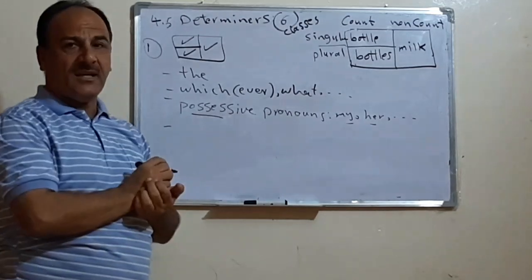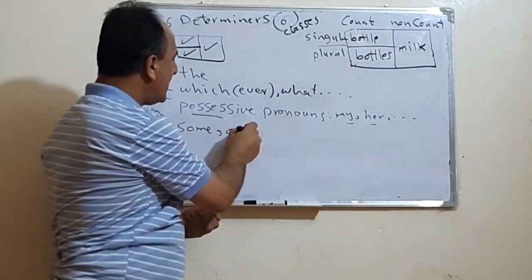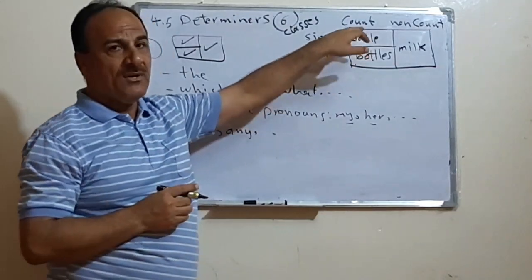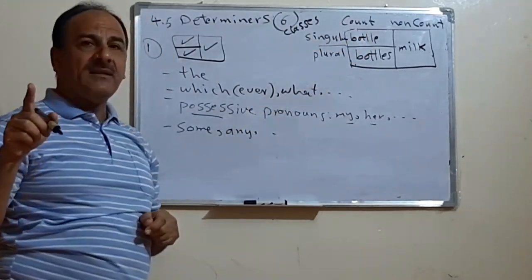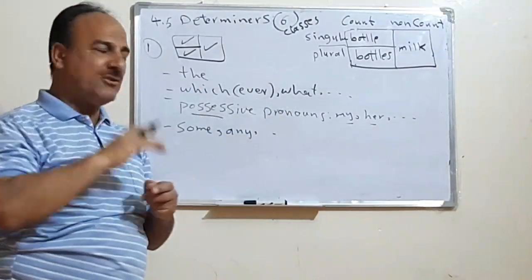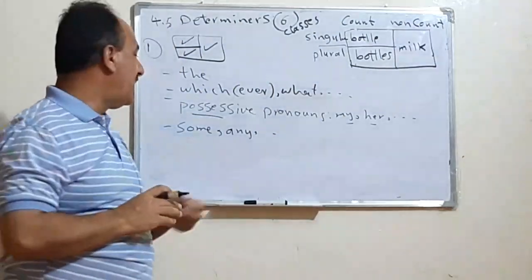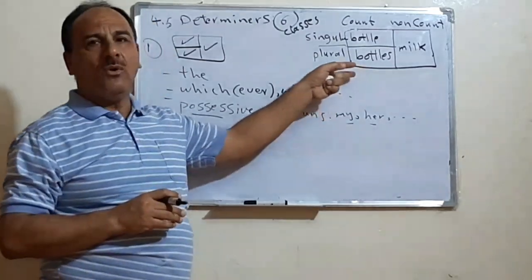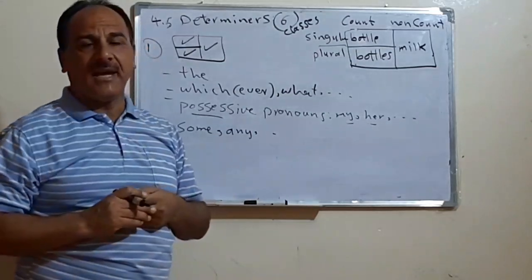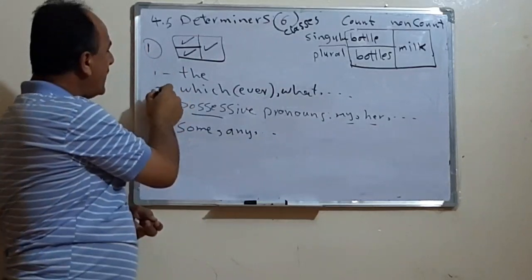The fourth group includes 'some' and 'any'. We can say 'we painted some of the door' (meaning part of the door), 'some students are here', or 'any water you want to drink, you can'. So 'some' and 'any' can be used before all three noun types as well.